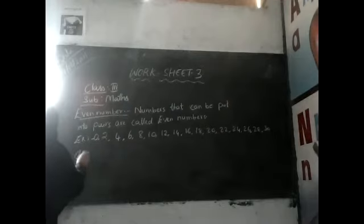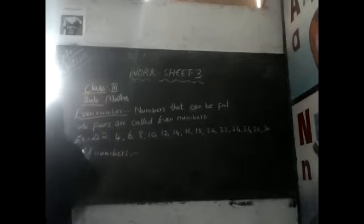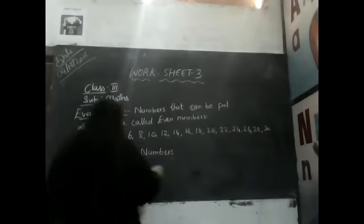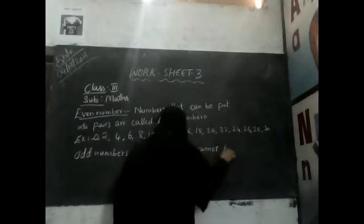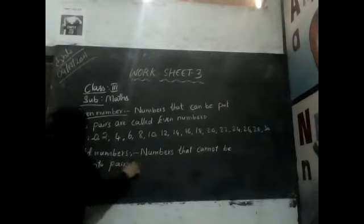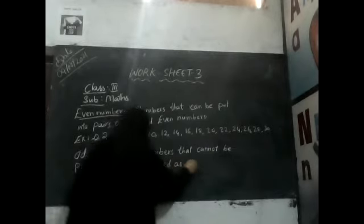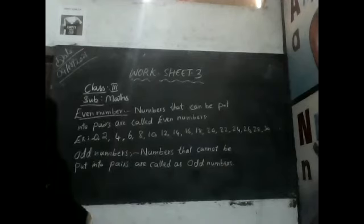Odd numbers that cannot be put into pair. It is called as odd number. No pair will be there. Single will be there. It does not match. Matching will not be there. Let us see the example here.